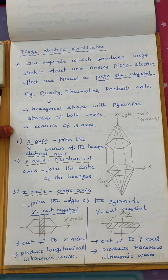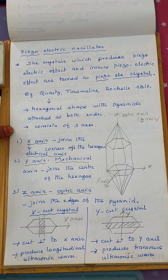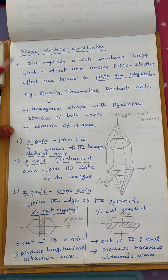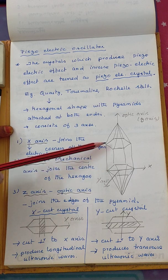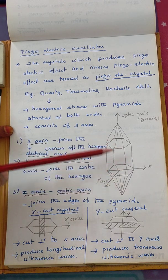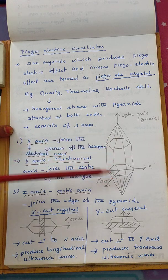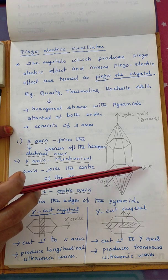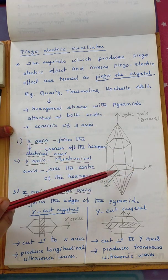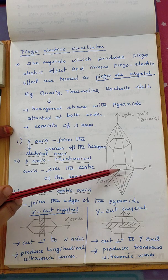A piezoelectric crystal is one which produces the piezoelectric as well as the inverse piezoelectric effect. Normally quartz, tourmaline, and Rochelle salt are used as piezoelectric crystals. Usually the shape of the piezoelectric crystal is hexagonal, and two pyramids are attached at the two ends.